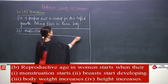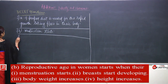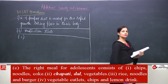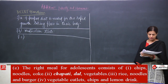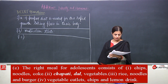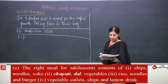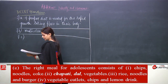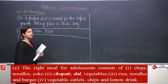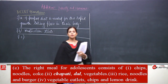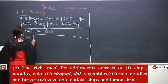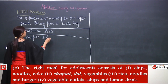Now we will talk about question 7C. The question is: what is the right meal for an adolescent? Option 1: chips, noodles, coke - they like this, but is it correct? No. Option 2: chapati, dal, vegetables and rice - this is good. Option 3: noodles and burgers - not acceptable. Option 4: vegetable cutlet, chips and lemon drink - no, not acceptable. So the correct answer for 7C is chapati, dal and vegetables.